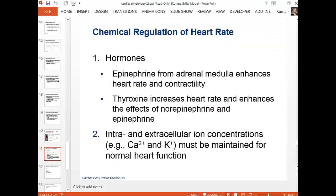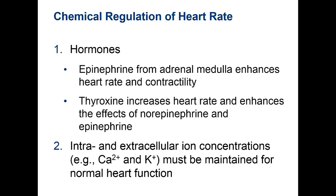Heart rate is simply beats per minute. What influences heart rate? Several things: hormones — epinephrine raises heart rate. Thyroxine from the thyroid gland drives metabolism, so people with hyperthyroidism have a rapid heart rate, while those with low thyroid have a lower heart rate. Ions affect heart rate because we're trying to reach the action potential — the more calcium available, the more ability to rise to threshold and maintain the plateau during contraction.